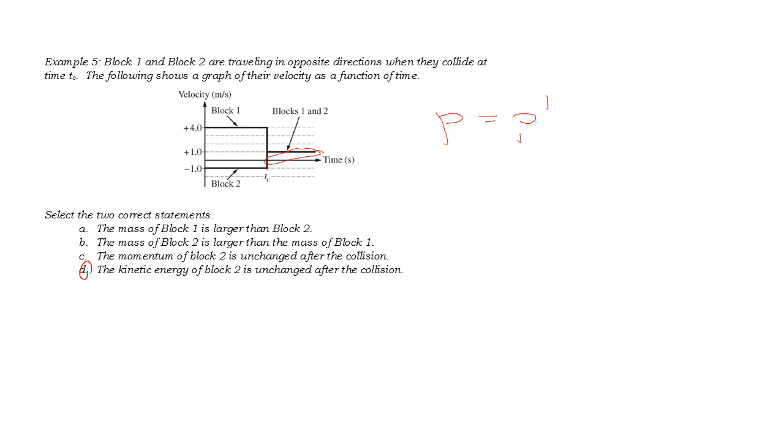The second choice we have to figure out is which block is more massive. Look at the change in velocity of block one. It reduced its velocity by three meters per second. Whereas block two changed its velocity by two meters per second. If the conservation of momentum is true, the amount of change in momentum of block one has to equal the amount that the momentum of block two changed just in the opposite direction.